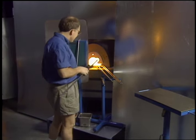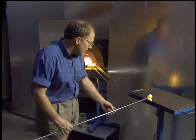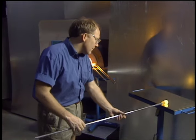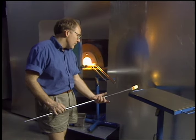molten glass is gathered onto the blowpipe, then rolled back and forth on a smooth surface, the marver, to give it a cylindrical shape.